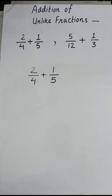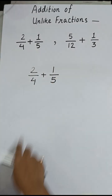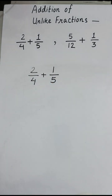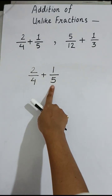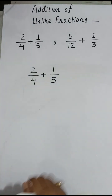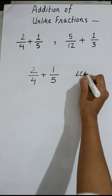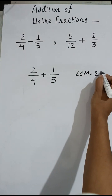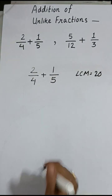To convert unlike fractions into like fractions, we have to find the LCM of the denominators. Here the denominators are 4 and 5, and these two numbers are consecutive numbers. For finding the LCM of two consecutive numbers, just simply multiply them — the product will be the LCM. So the LCM of 4 and 5 is 20.